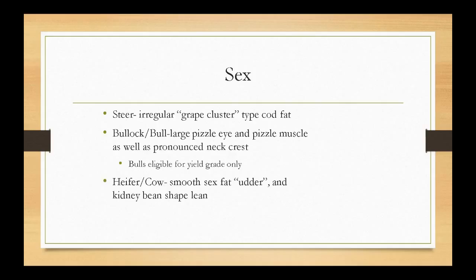Let's start with sex. You can identify steers by an irregular grape cluster or cod fat from where the testes were removed. Bulls and bullocks have a large pizzle eye, where the penis attaches, a pizzle muscle, and a pronounced neck crest — and it's important to identify these because bulls are eligible for yield grade only. Heifers and cows both have smooth sex or udder fat and a kidney bean lean shape in the carcass hindquarter.